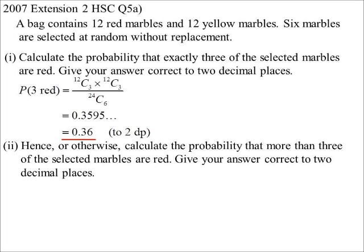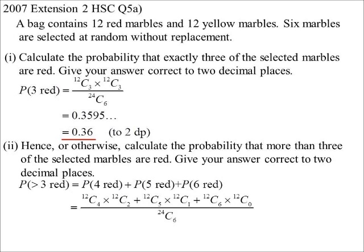Hence or otherwise, calculate the probability that more than three of the selected marbles are red. Well, we've just worked out the probability that exactly three of them are red. So greater than three would be probability of four being red, five being red, or six being red. If I did the complementary idea then I'd have to work out zero, one, two, and also three which I've already got. So we actually would be doing more work if I went the complementary idea this time. So probability of four, five, and six. So four would be 12C4, 12C2, then five would be 12C5, 12C1, and six 12C6, 12C0, giving us to two decimal places 0.32.